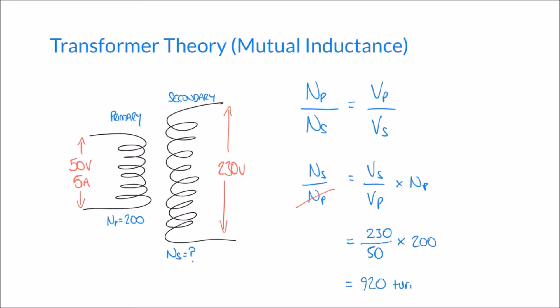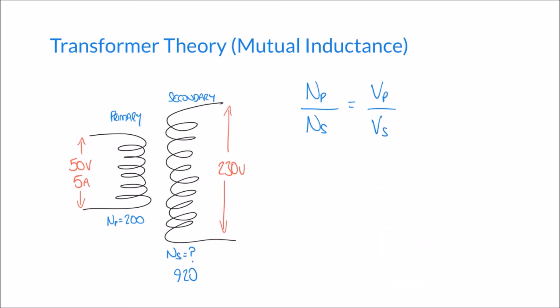So with 920 turns on the secondary, we can step up a 50-volt input on the primary and induce a voltage of 230 volts on the secondary coil. In our example there is also a current of 5 amps applied to the primary, but we don't yet know the current induced in the secondary coil.